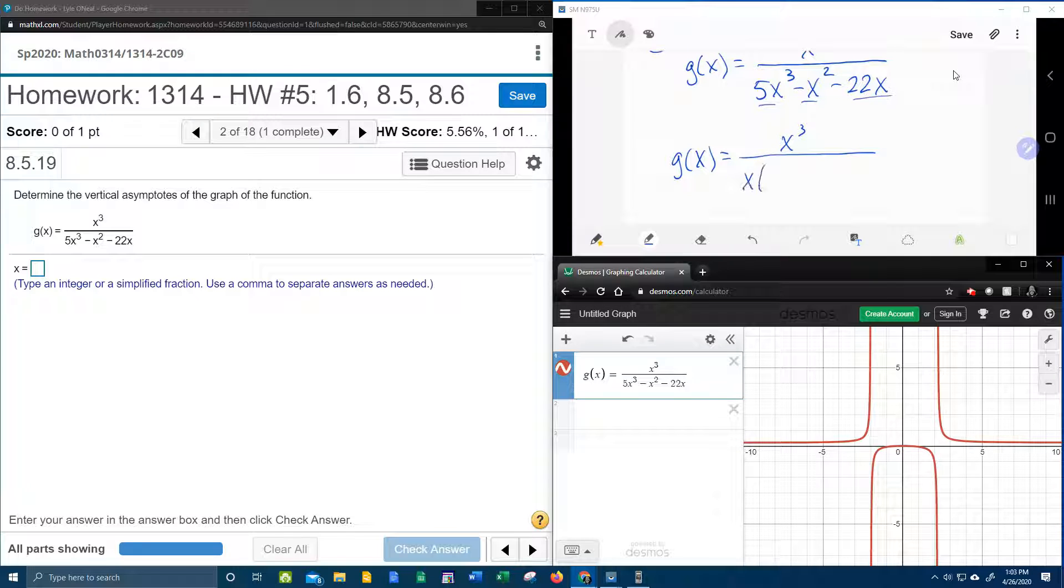So the numerator is x to the third. If I factor out an x, that's going to leave me with 5x squared minus x minus 22. That took an x from every term.